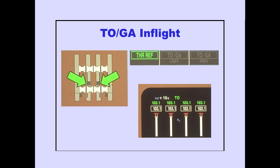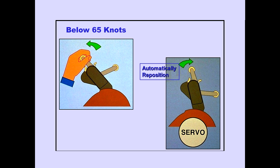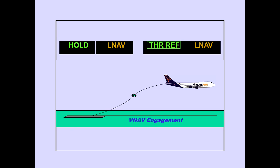Pushing the TOGA switch when in-flight cancels any takeoff derates. Thrust reference is still displayed on the PFD, and the reference thrust becomes full takeoff thrust. If the thrust levers are manually moved below 65 knots, the thrust levers will automatically reposition to the reference thrust limit. Hold remains engaged during takeoff until VNAV engagement, at which point the autothrottle mode becomes thrust reference.